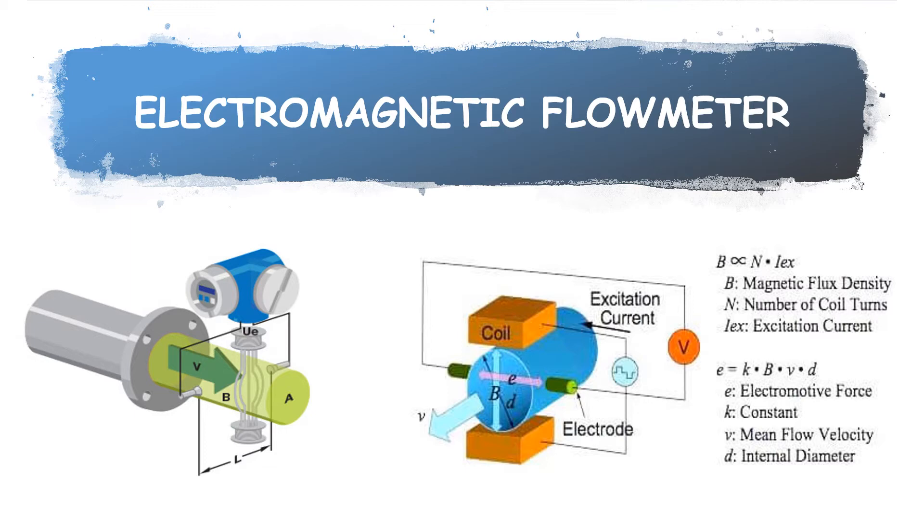Mathematically we state Faraday's law as E proportional to VBL, where E is the voltage generated in the conductor, V is the velocity of the conductor, B is the magnetic field strength, and L is the length of the conductor.